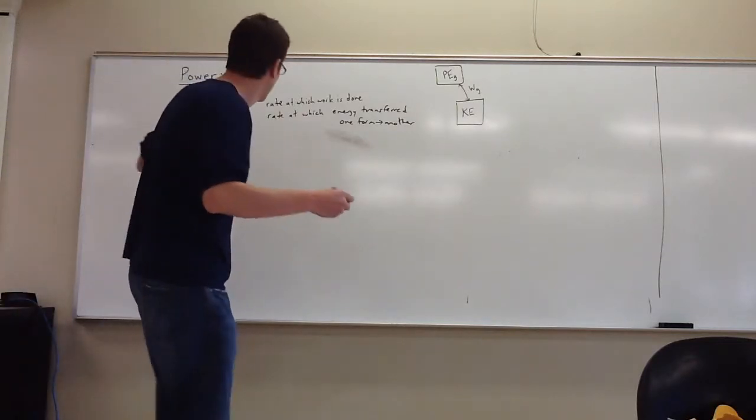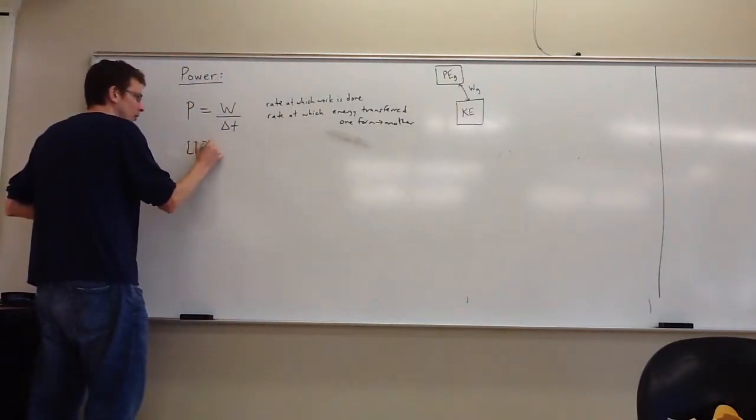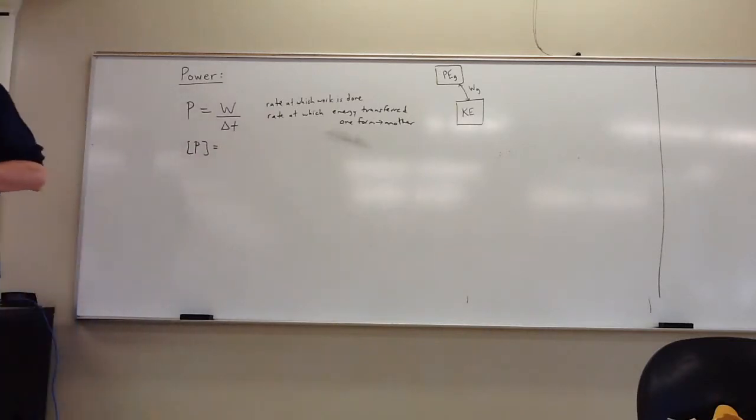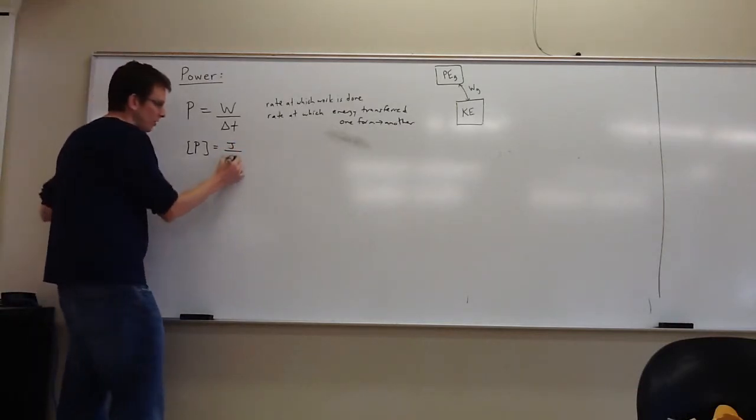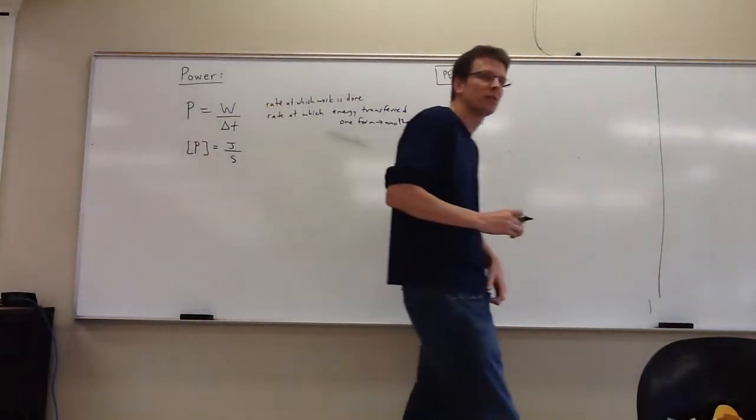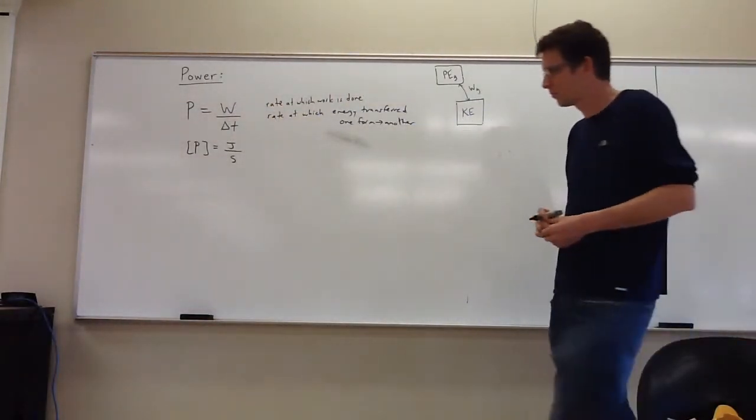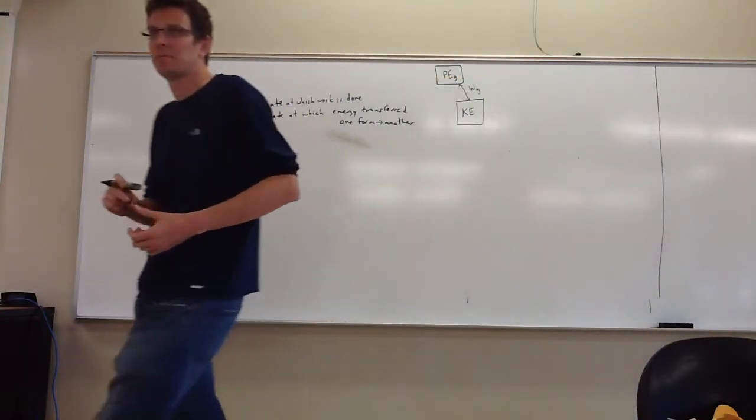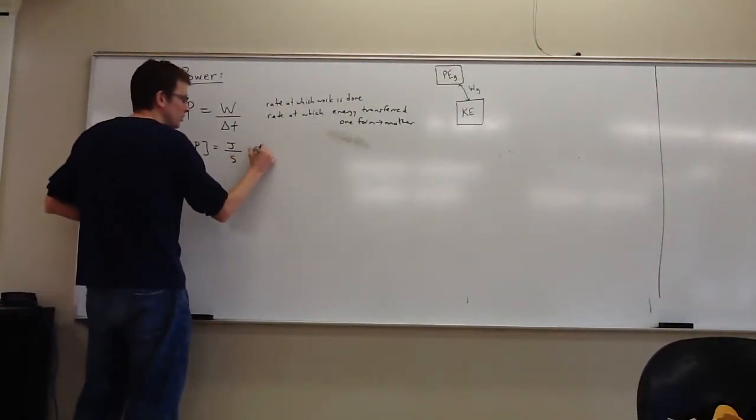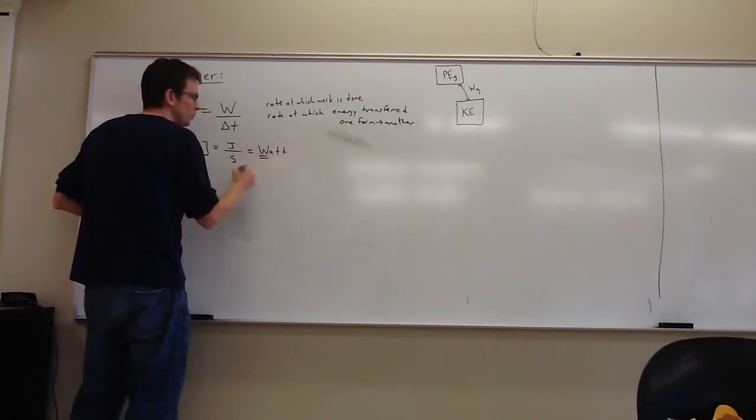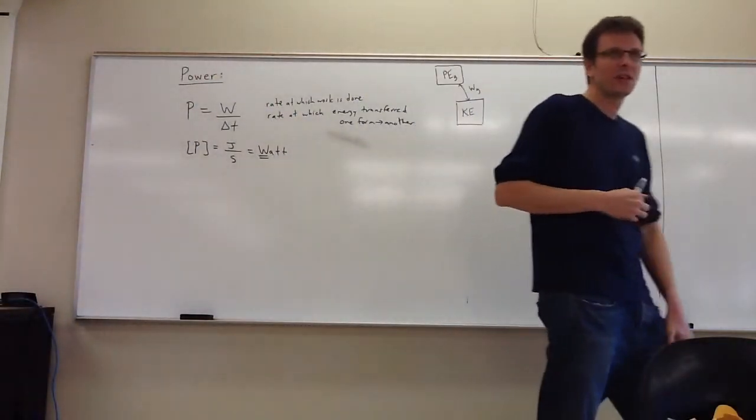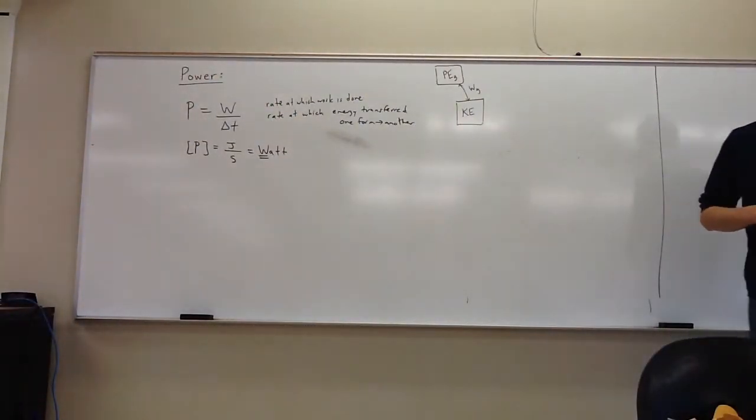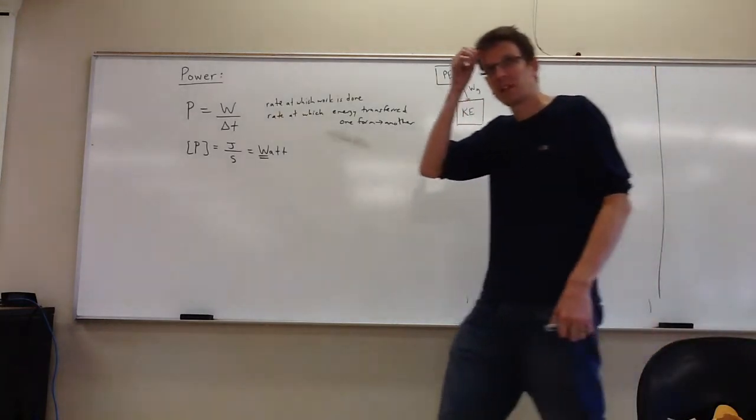I should mention what the units are. The units for power are going to be the units of work over the units of time. Does anyone remember what the units are of work? Joules. And how about time? Seconds. And SI, right? So power is measured in joules per second. This does get its own name. It's called a watt. And that's also capital W, which I know might seem confusing. But that's the nature of physics—there's only so many letters. So some of them get used more than once.